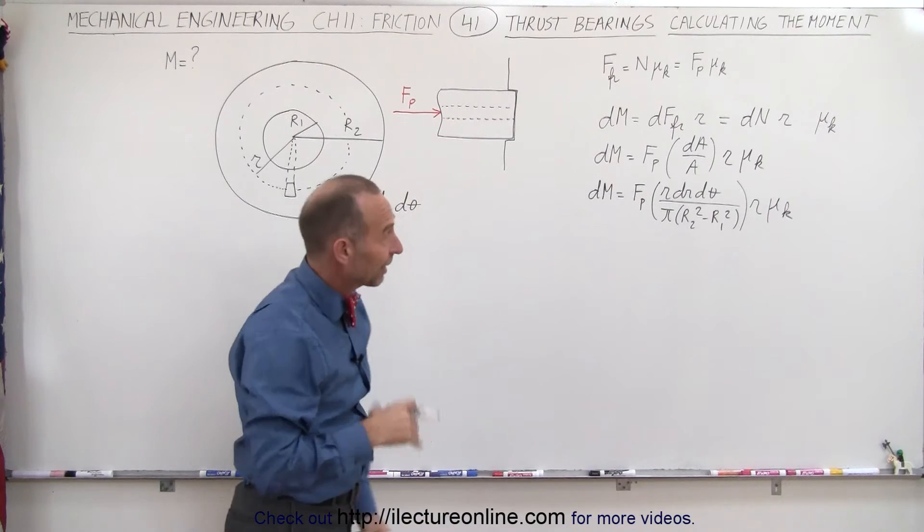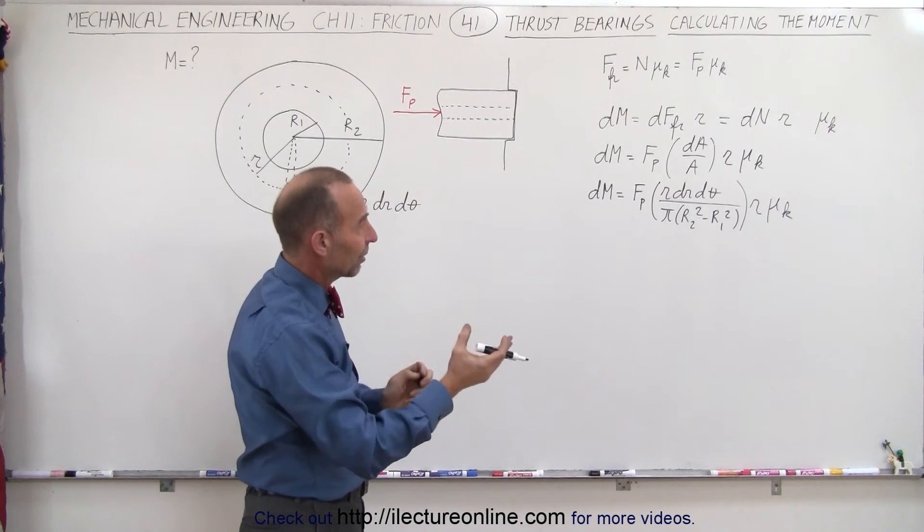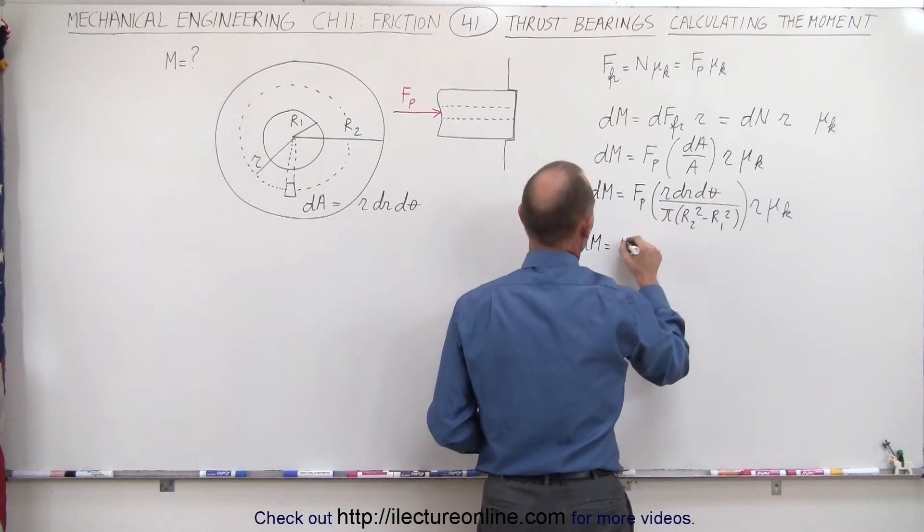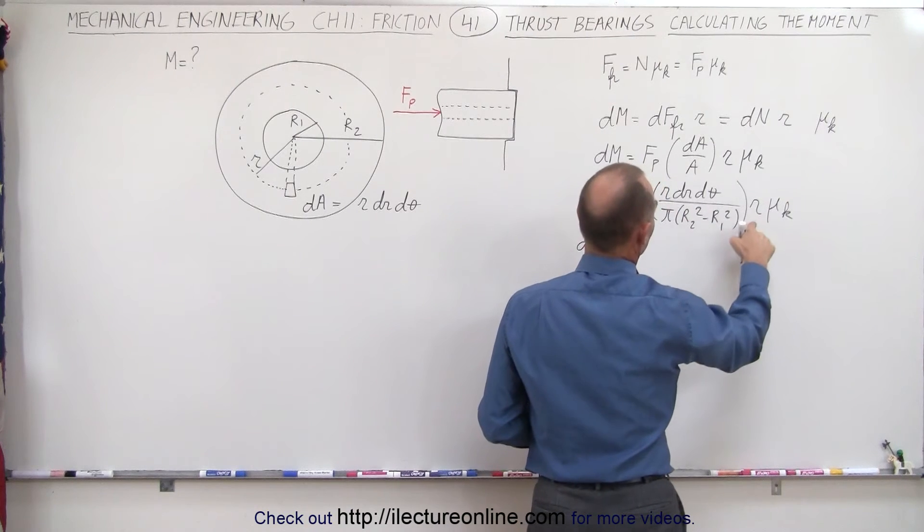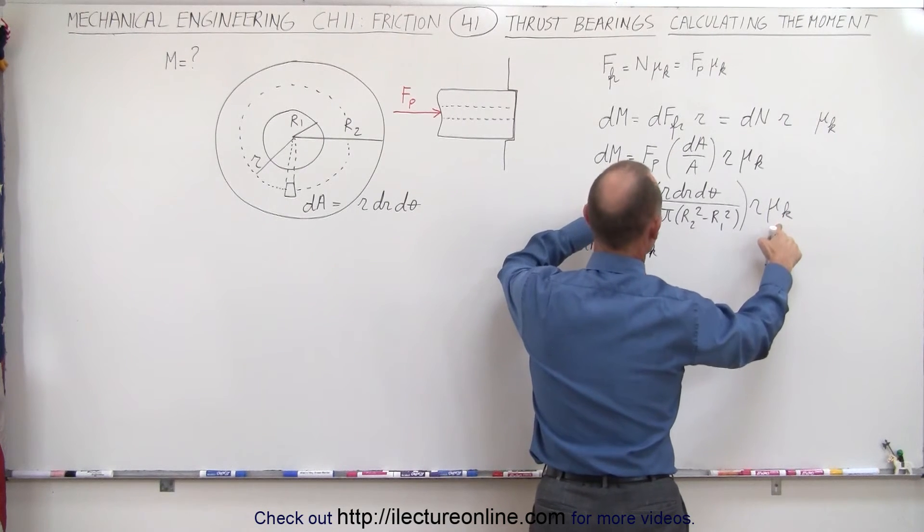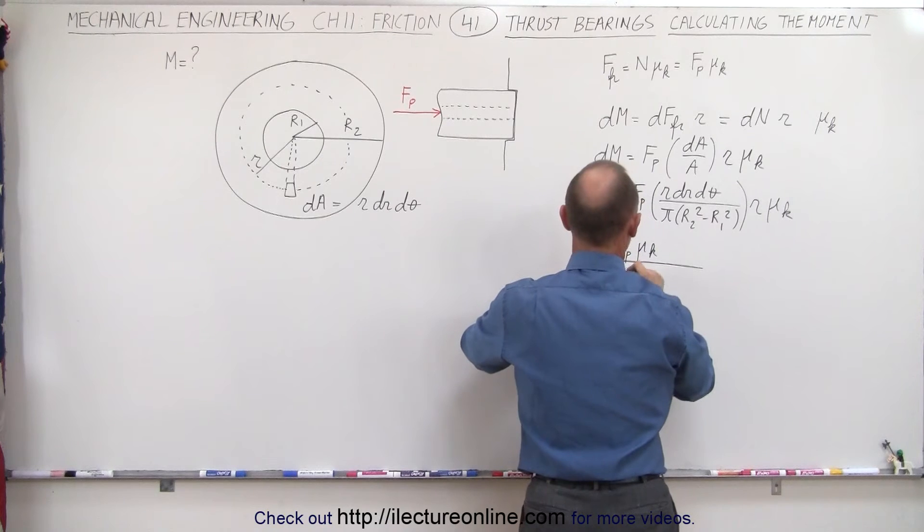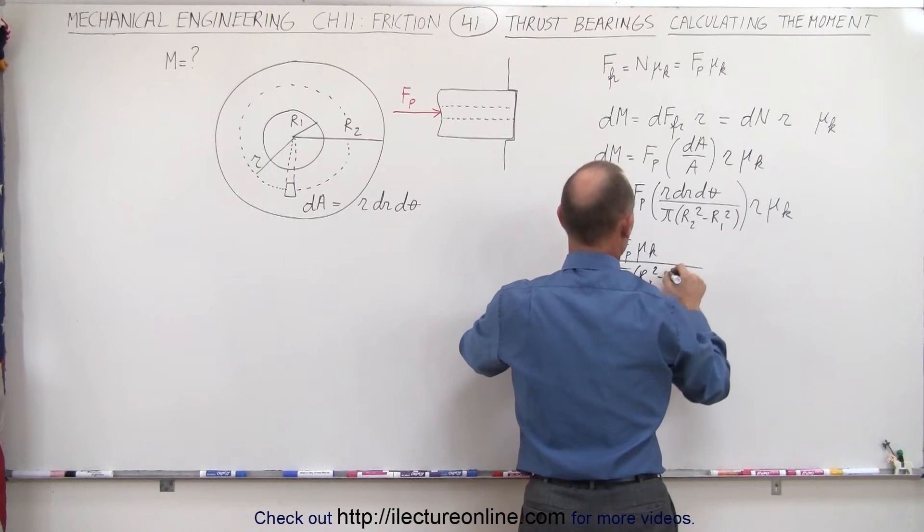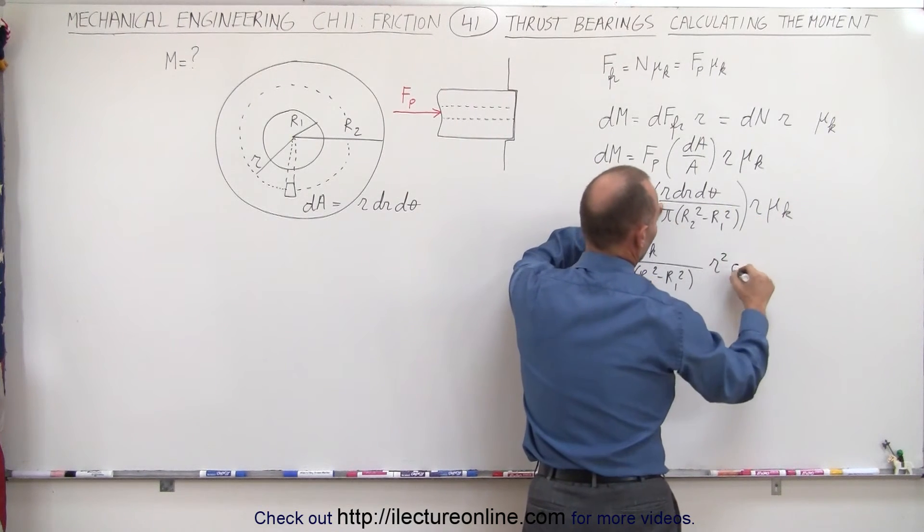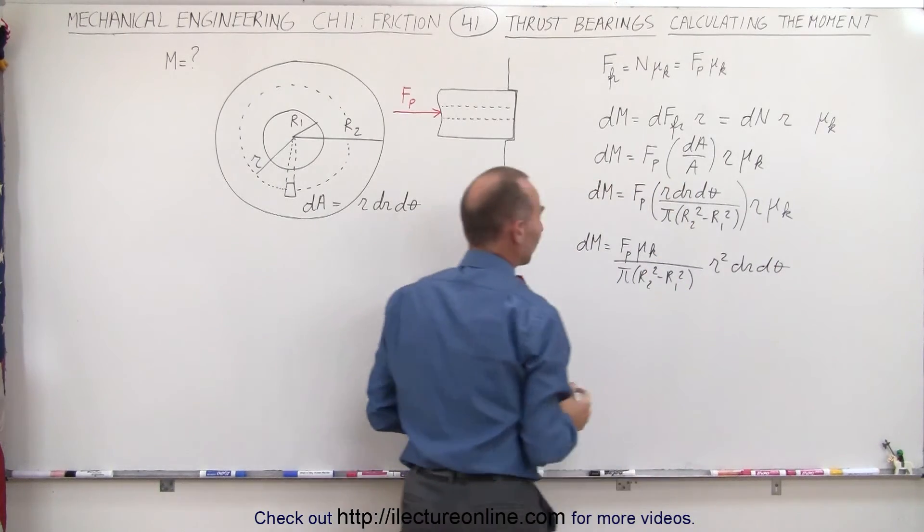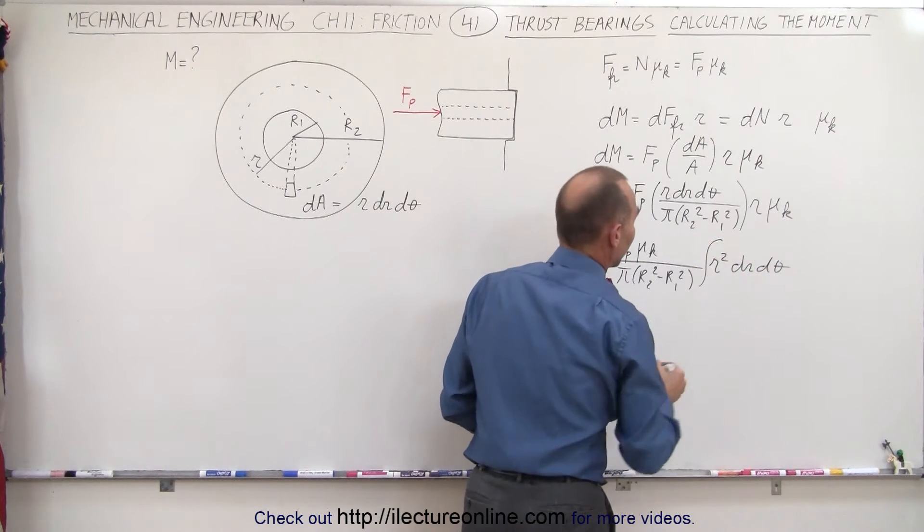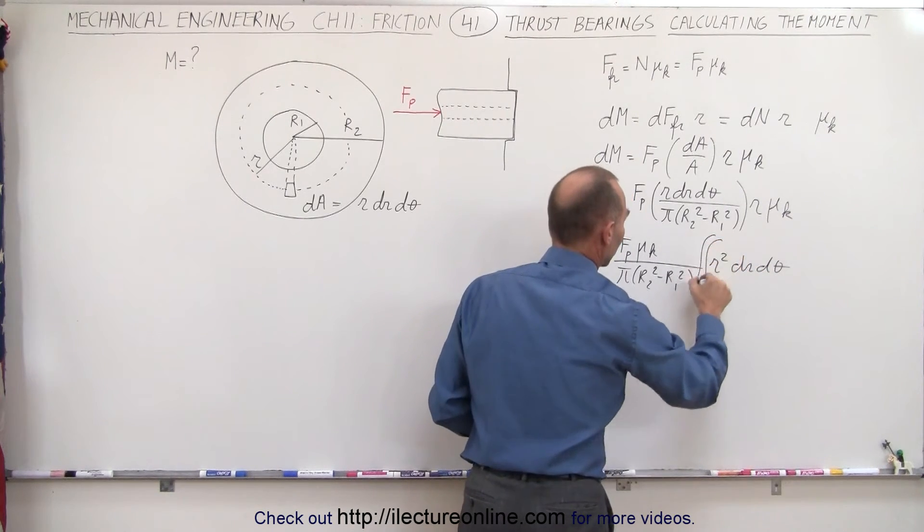Then we realize since we're going to have to find m, we're going to have to integrate both sides, we can separate things which are constants from those which are variables. So we can say that dm can now be written as f sub p times, we have a mu sub k in the numerator. So f sub p times mu sub k divided by pi times r2 squared minus r1 squared, and multiply that times r squared, because r times r gives us r squared dr d theta. And now to find the total moment, all we have to do is integrate this, which means we're going to integrate that. And of course, since there's two variables, r and theta, we're going to have to do a double integral on this side.